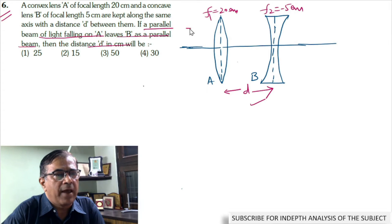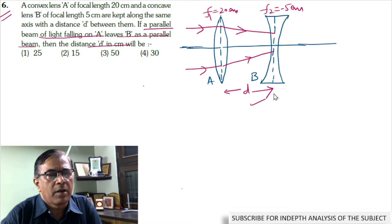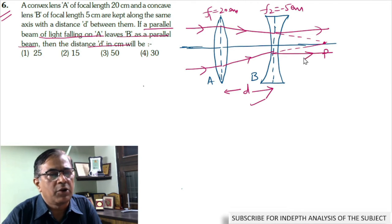Here is a parallel beam of light that is incident upon the convex lens A. These rays are refracted. Had concave lens been absent, these rays would have met at point P on the principal axis. According to the problem, after refraction from the concave lens, rays again become parallel to the principal axis.